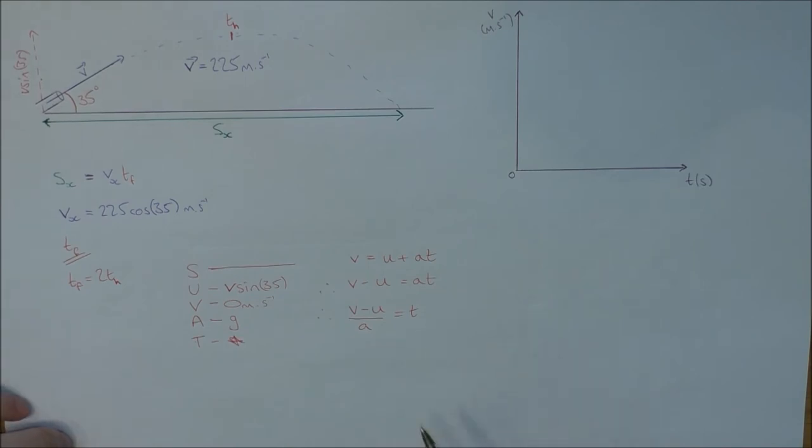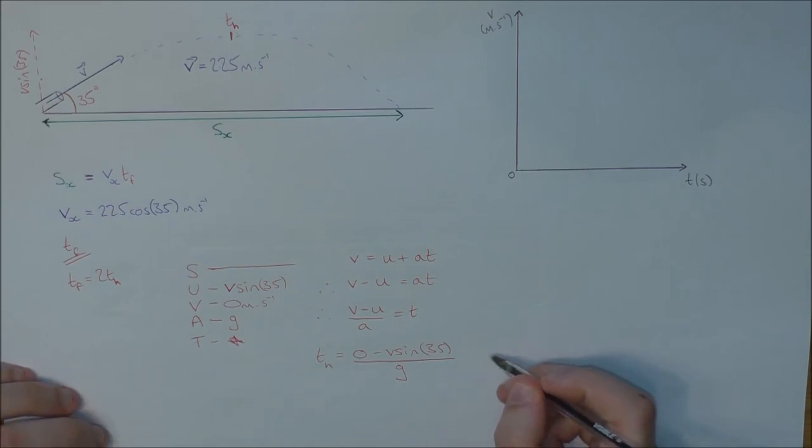I'm then going to rewrite this out: that T_H equals zero minus V sine 35 all over little g. That means that I now know T_F because all I've got to do is multiply this by two. Now I'm going to do something that's not exactly mathematically correct here, but I'm just going to get rid of this negative sign.